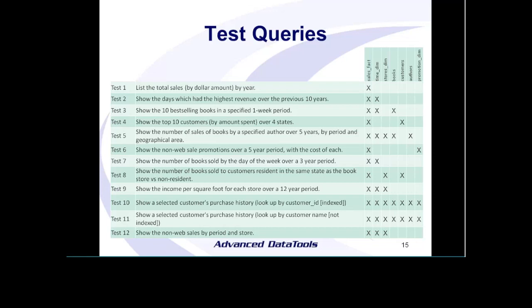Since we're representing a bookstore, test three asks: what are our top ten best-selling books or products within a one-week period — what's selling well currently. Test four looks at the top ten customers by how much money they've spent, restricted to four different states — who are your big spenders. Test five looks at a specified author — actually Tom Clancy in our books table — examining how many books were sold by period over time and over geographical area, such as the West Coast or East Coast.